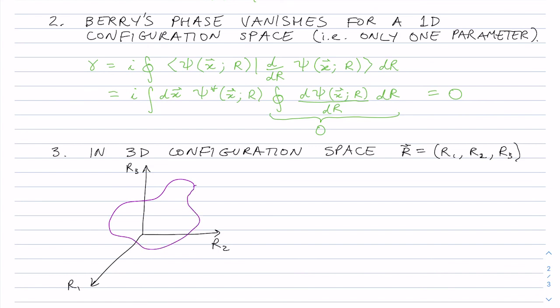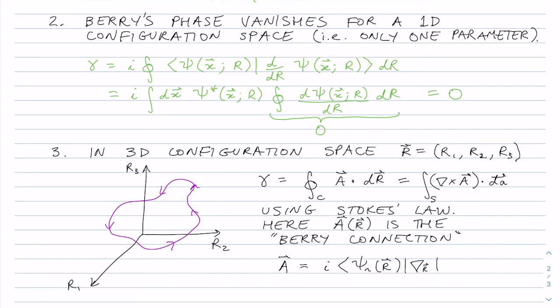We're going to have our path as before, except now we make sure it's closed. And around this path, we can write gamma is the integral over that contour of some vector a dot dr, where a is going to include the factor of i. And now we can use Stokes' rule, Stokes' law, to go to...